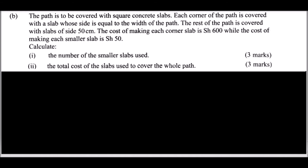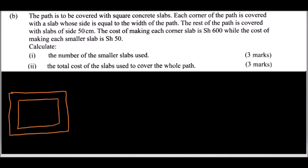To approach this, use the previous sketch or draw a new one. The garden is 10 meters by 8 meters. The corners are covered by slabs equal to the width of the path. We found that x equals 2 meters, so the path width is 2 meters.